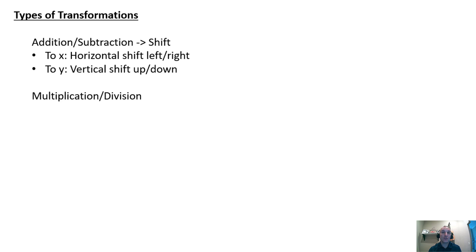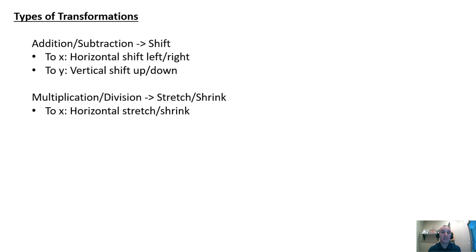Multiplication or division will correspond to — and this may be the toughest one for most people — a stretch or a shrink, sometimes called a stretch or a compression. If you multiply or divide X by a constant, you're going to horizontally stretch or shrink. If you multiply or divide Y by a constant, you're going to vertically shrink or stretch.